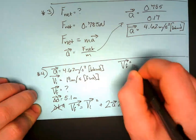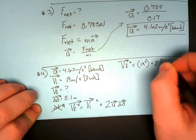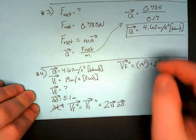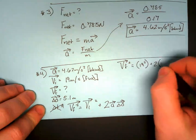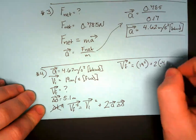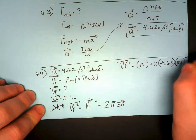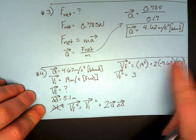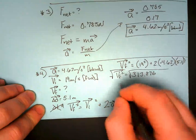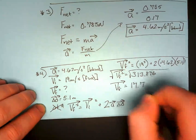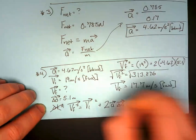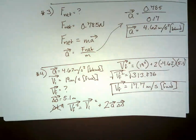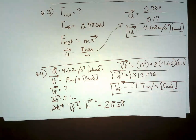So our final velocity is 17.7 meters per second forward. We need that direction — it's a vector quantity. And there you have it. That is all of the Check Your Understandings. If you still have any questions over any of these, make sure you get a hold of me. If not, I will see you in the next one.